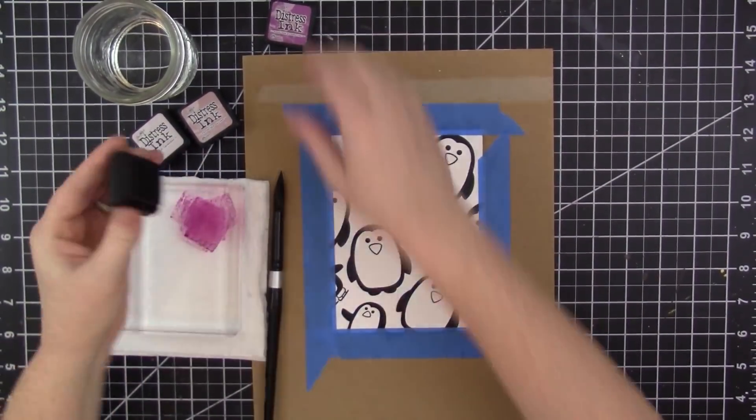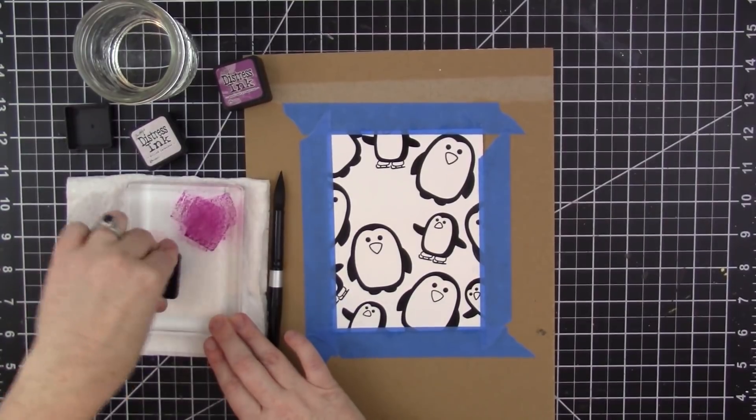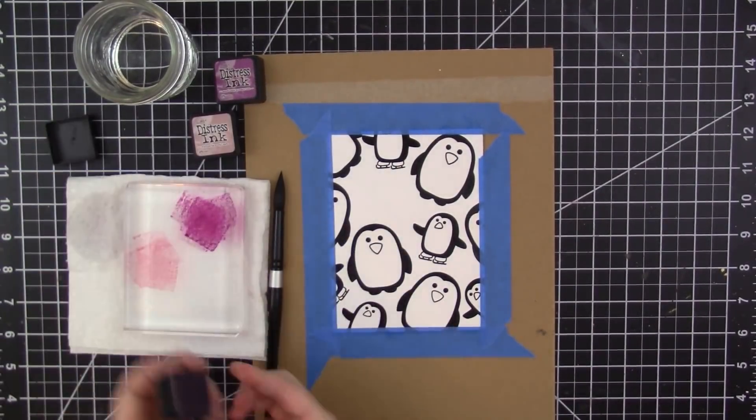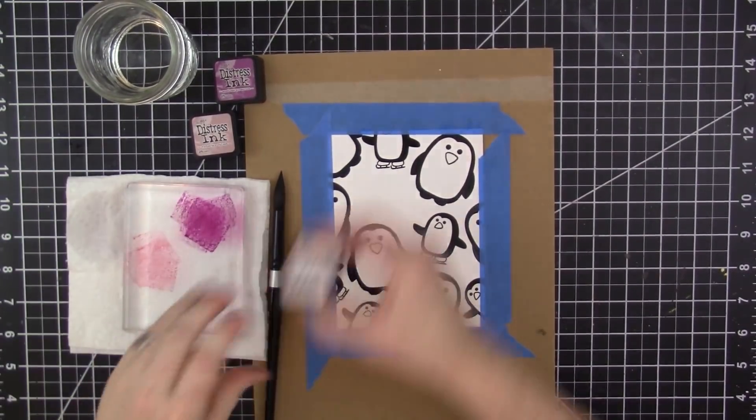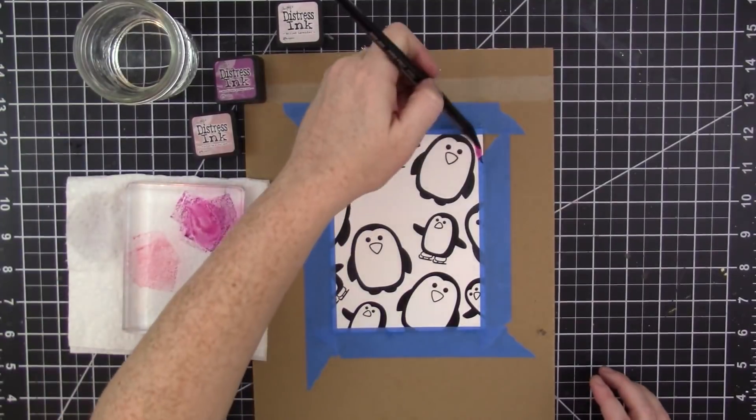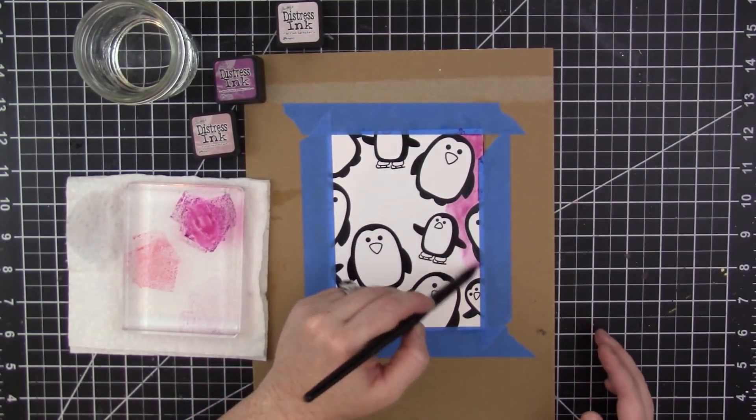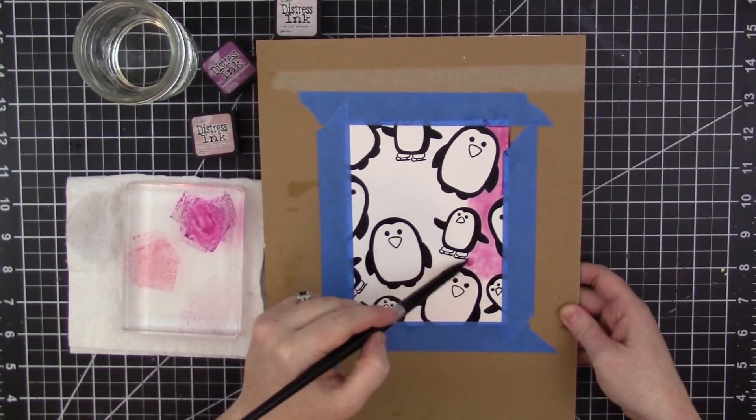I've been playing around with some color combinations and I really fell in love with the color trio: Seedless Preserves, Victorian Velvet, and Milled Lavender. I realized for this project though that the Milled Lavender is just too pale.